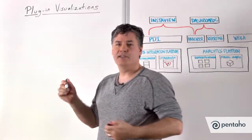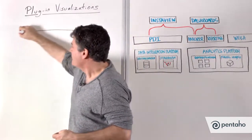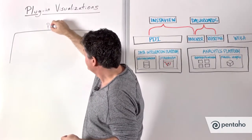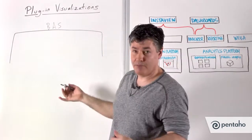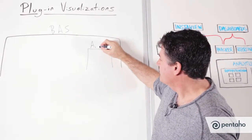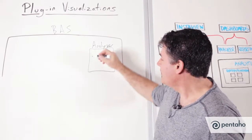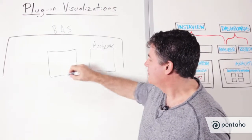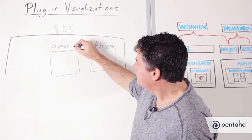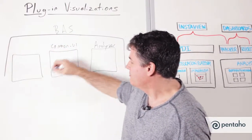All of this is operating inside of the business analytics server. Inside of the server we have a plug-in manager. Here is our business analytics server, and inside of here we have a plug-in manager. We have Analyzer as a plug-in, which is using another plug-in called Common UI. And now I've got my third plug-in, which is my new visualization.